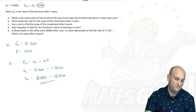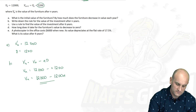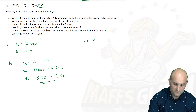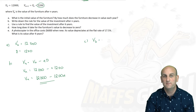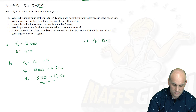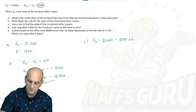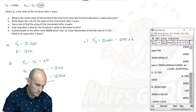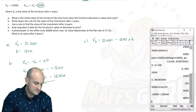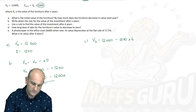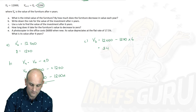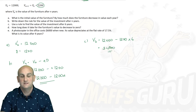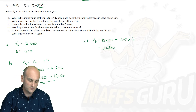Part C: use the rule to find the value of the investment after six years. So we now know N = 6. V6 = $12,000 − $1,200 × 6. Using the calculator: 12,000 − 1,200 × 6 gives me the staggering value of $4,800. That is the value of my furniture after six years.